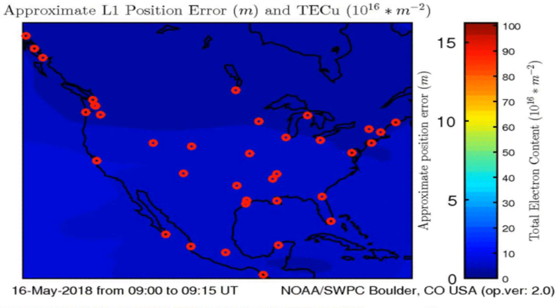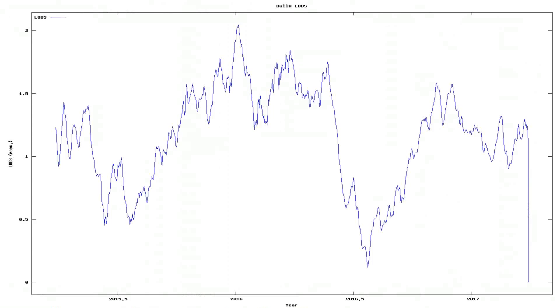And here we see the total electron content above the Earth. Anomalies in total electron content have sometimes preceded earthquakes below that area on Earth.